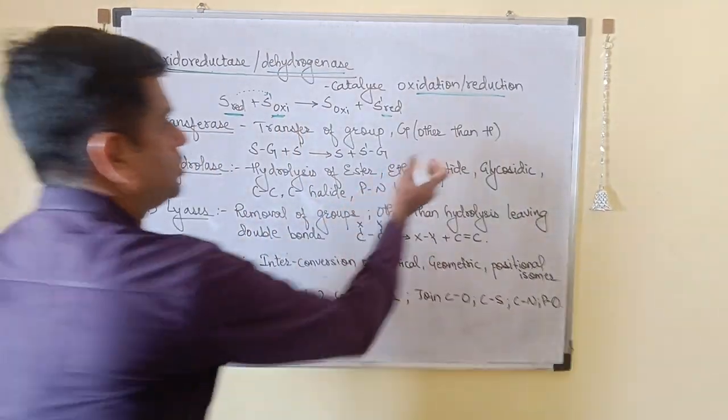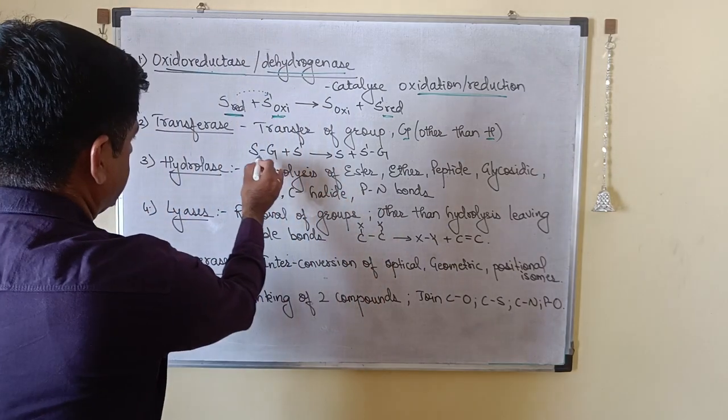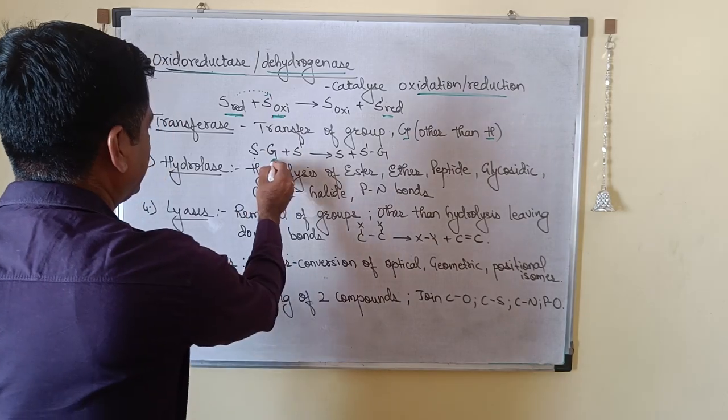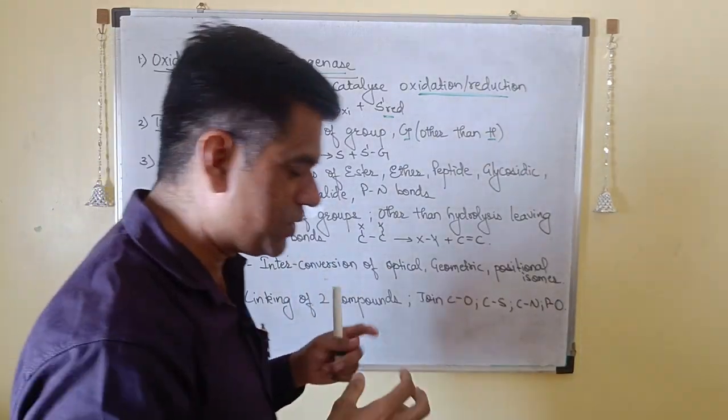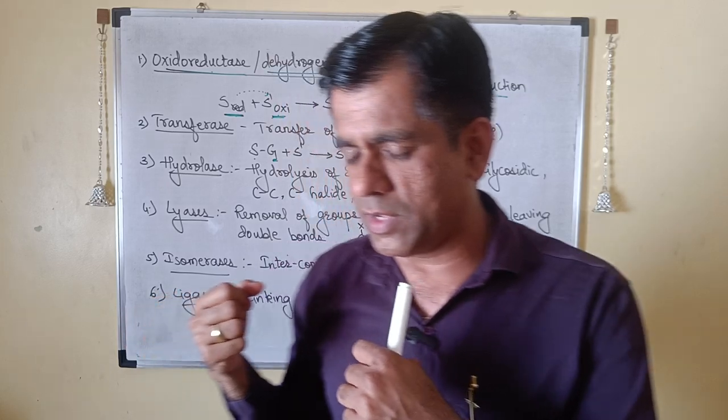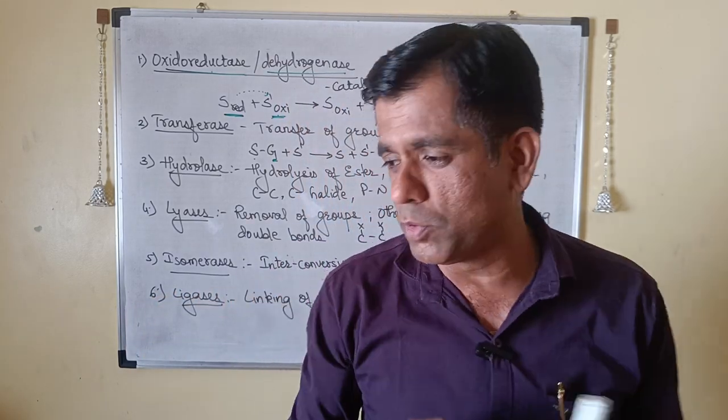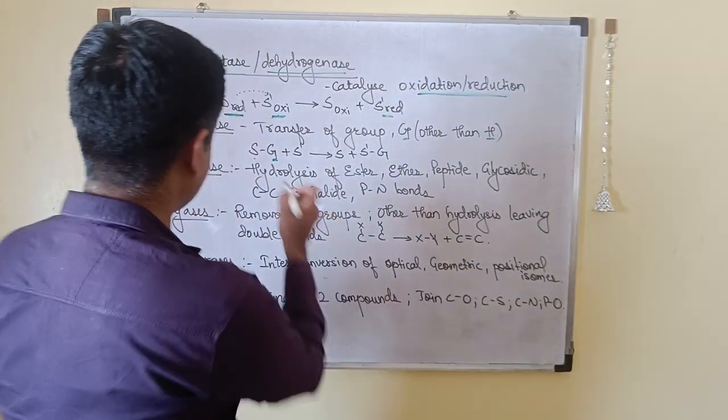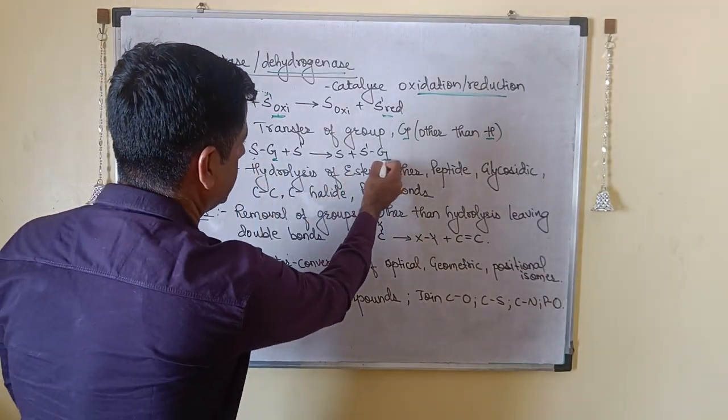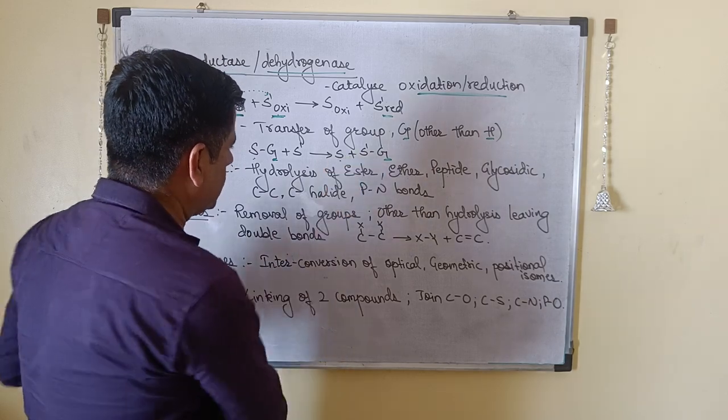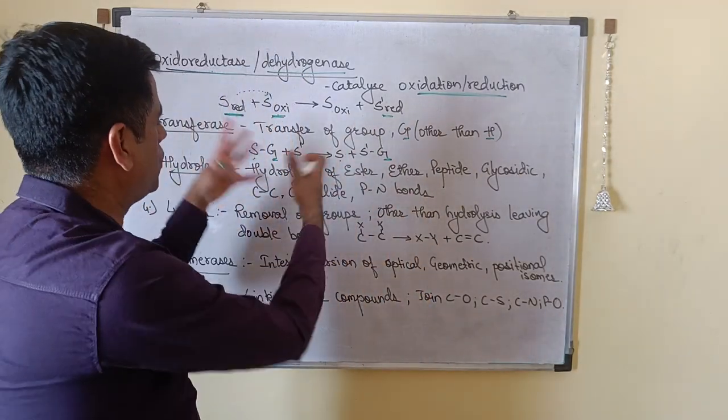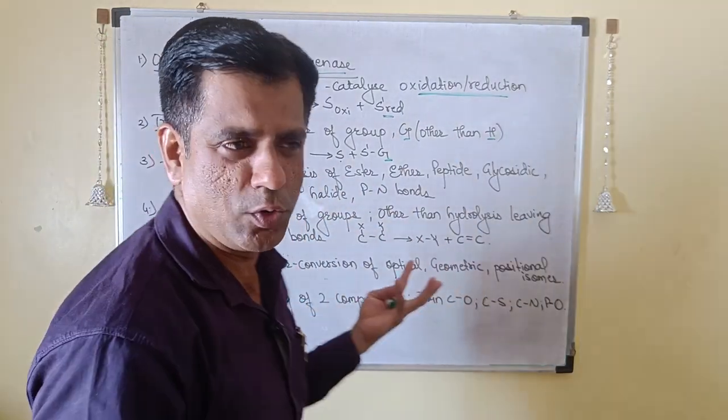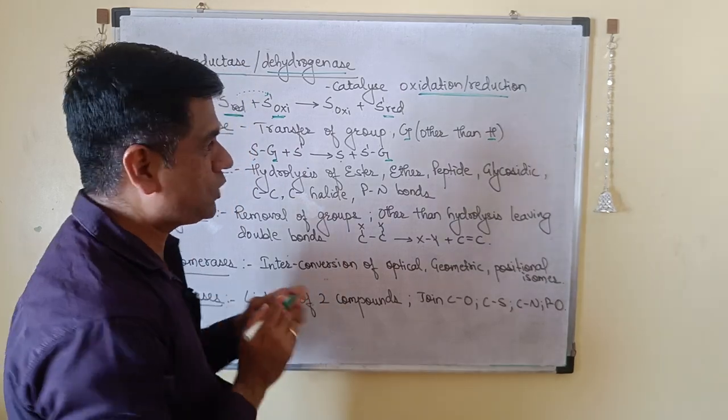Apart from hydrogen, if there is any other group, like it has some other groups, some amine groups, some carboxylic group or some ethyl group or methyl group or any group, and that group is being transferred now between the substrates. So transfer of that group. So any group, but it should not be hydrogen. If it is hydrogen then it would be oxidoreductase. So we are not talking about that.